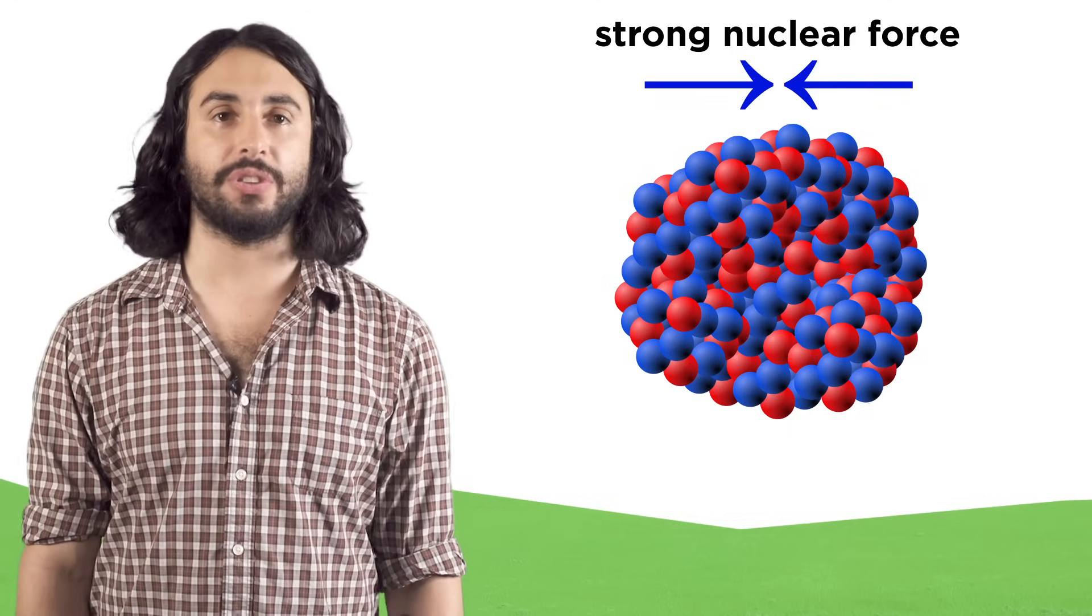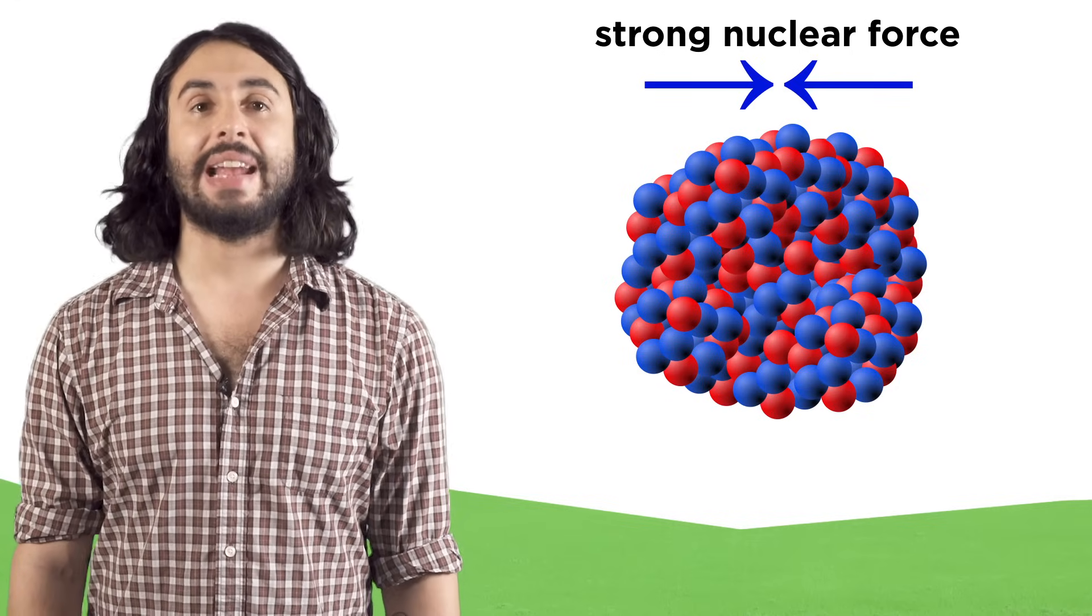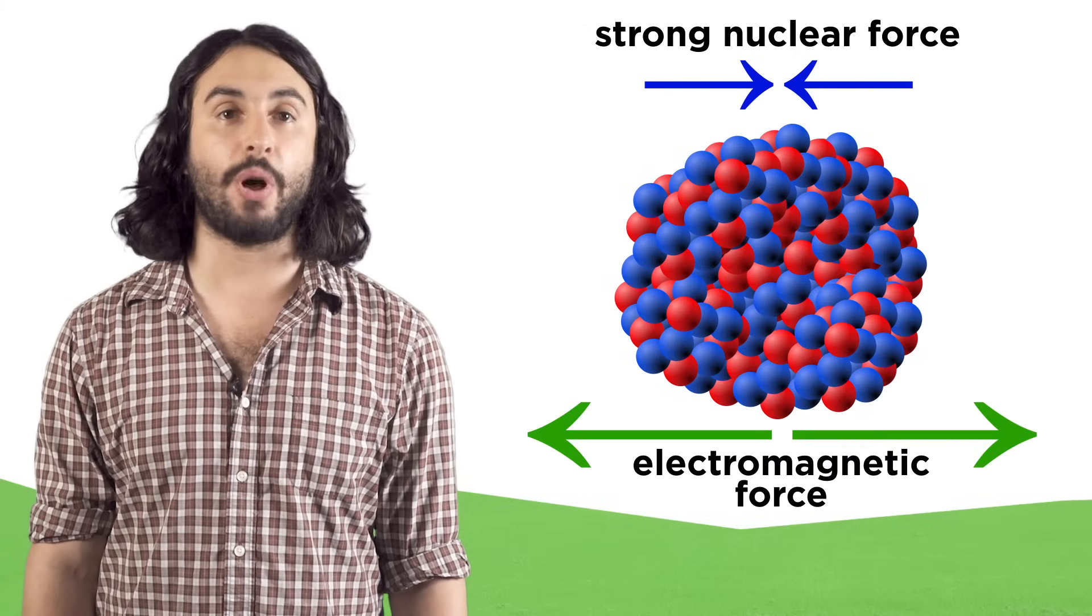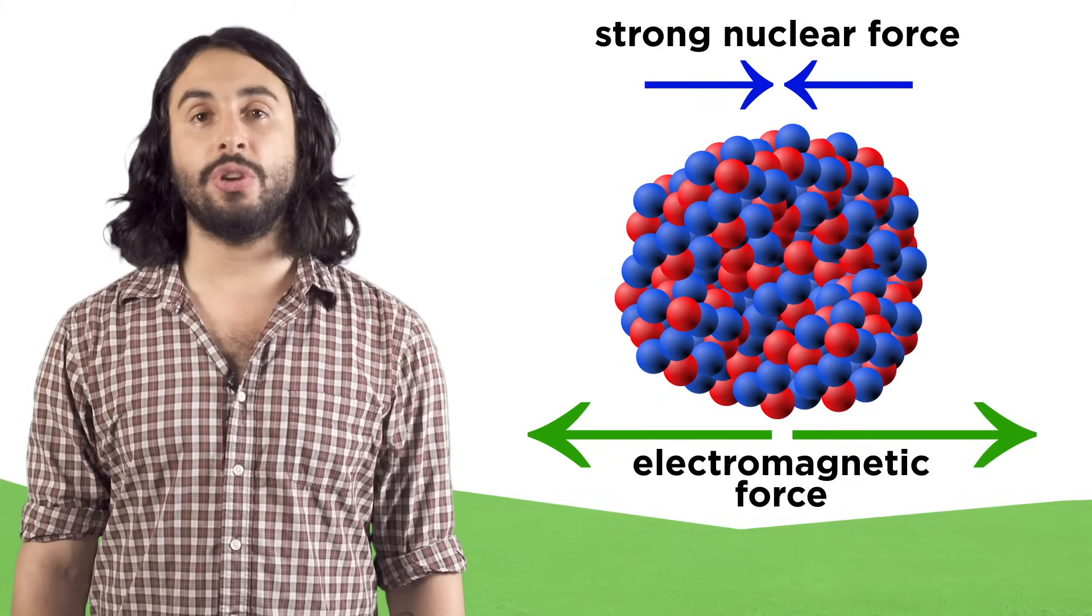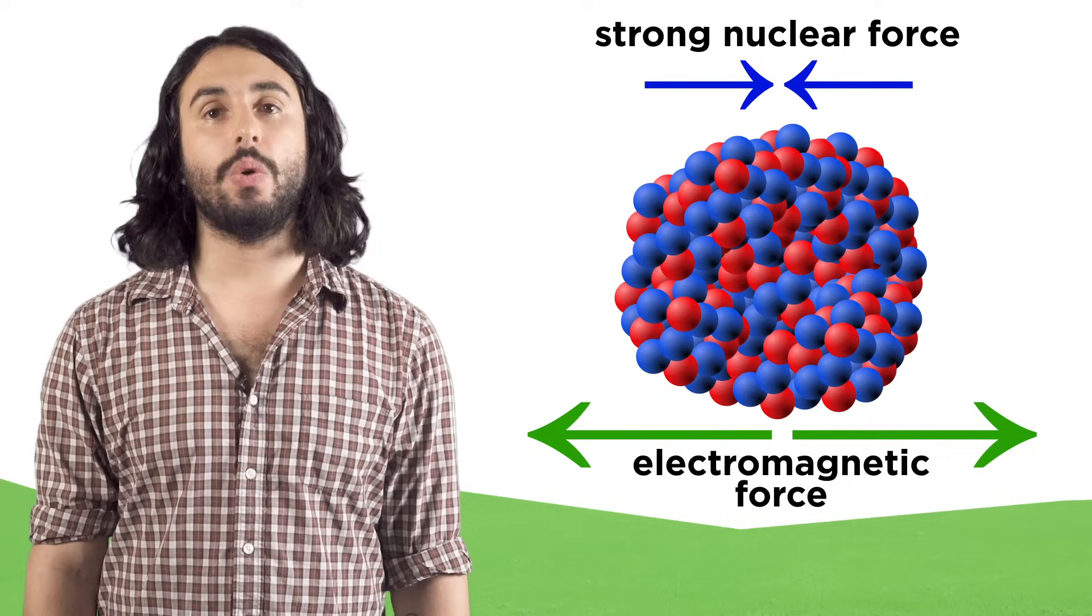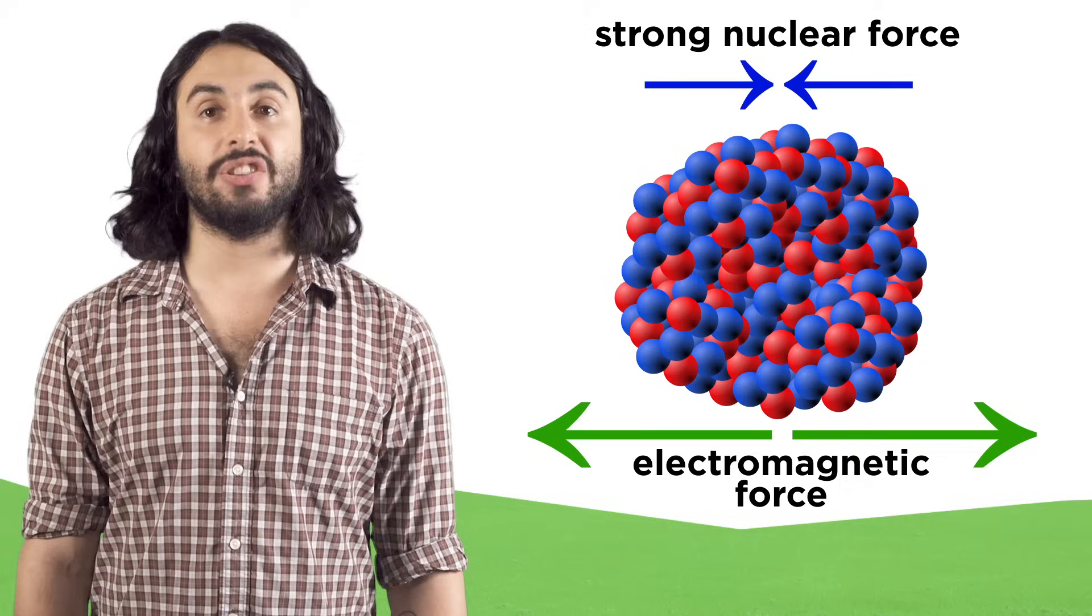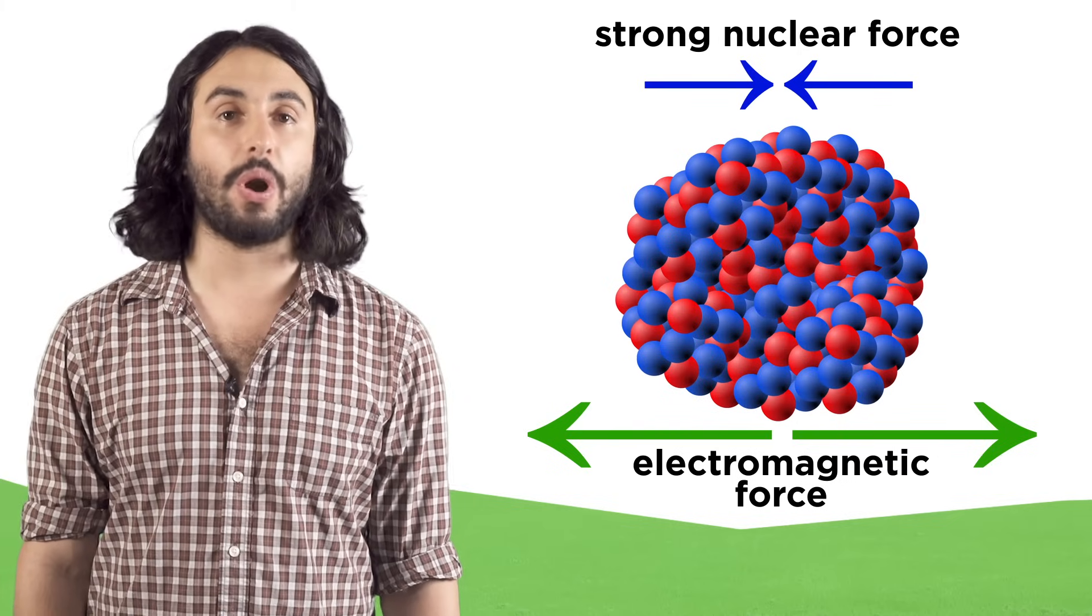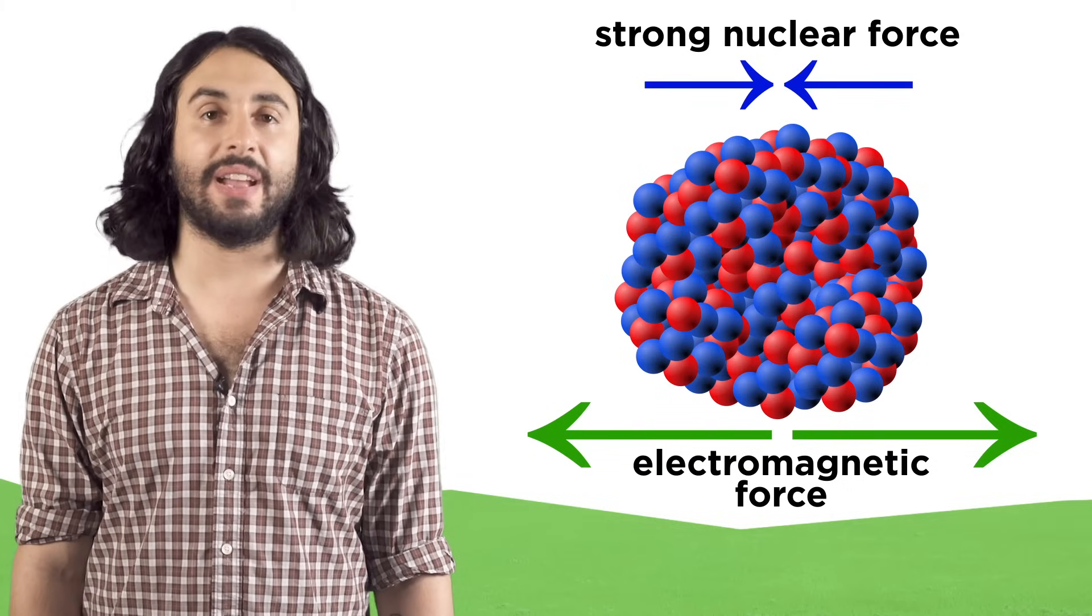You see, the strong nuclear force, which is mediated by particles called mesons, is very strong and it keeps the protons and neutrons fused together with a hundred times greater force than the electromagnetic repulsion that wants to push the protons apart. But the strong nuclear force drops off with distance more quickly than the electromagnetic. So if the nucleus gets too big, all of a sudden the strong nuclear force is too weak over the diameter of the nucleus to keep it all together and the protons will push apart. So for atoms larger than bismuth, the nucleus is just too big to be stable.